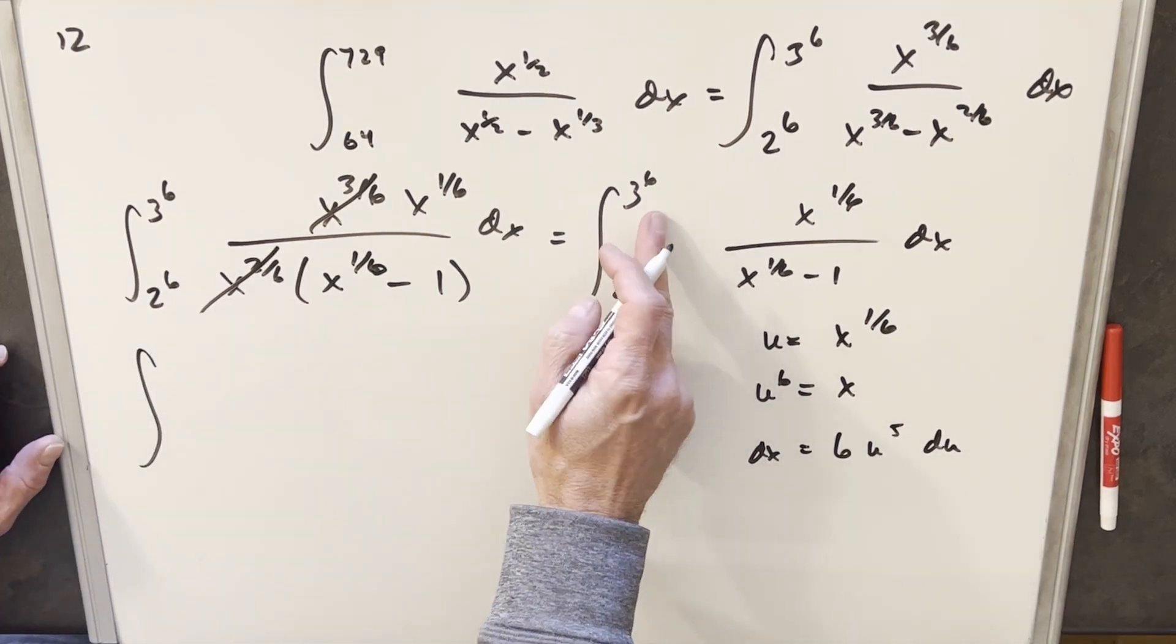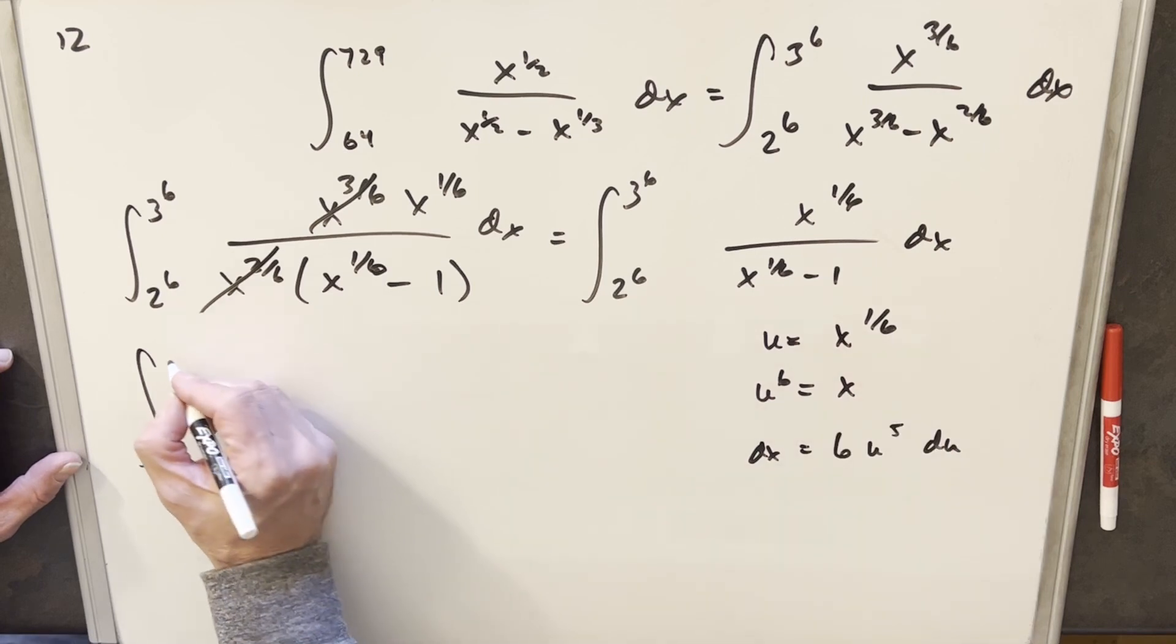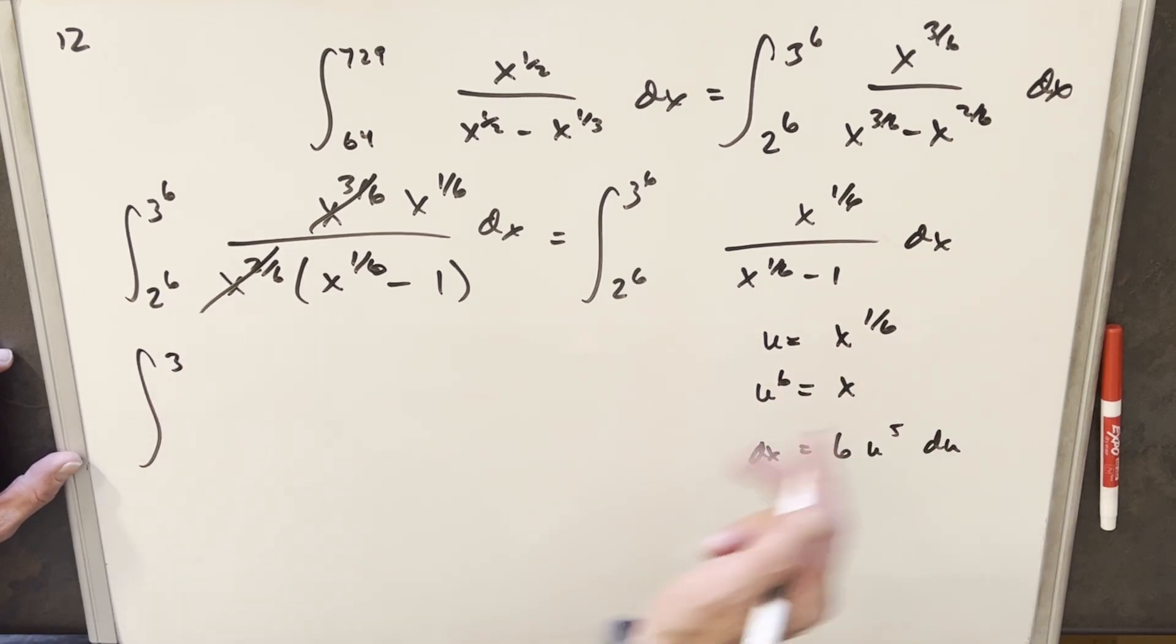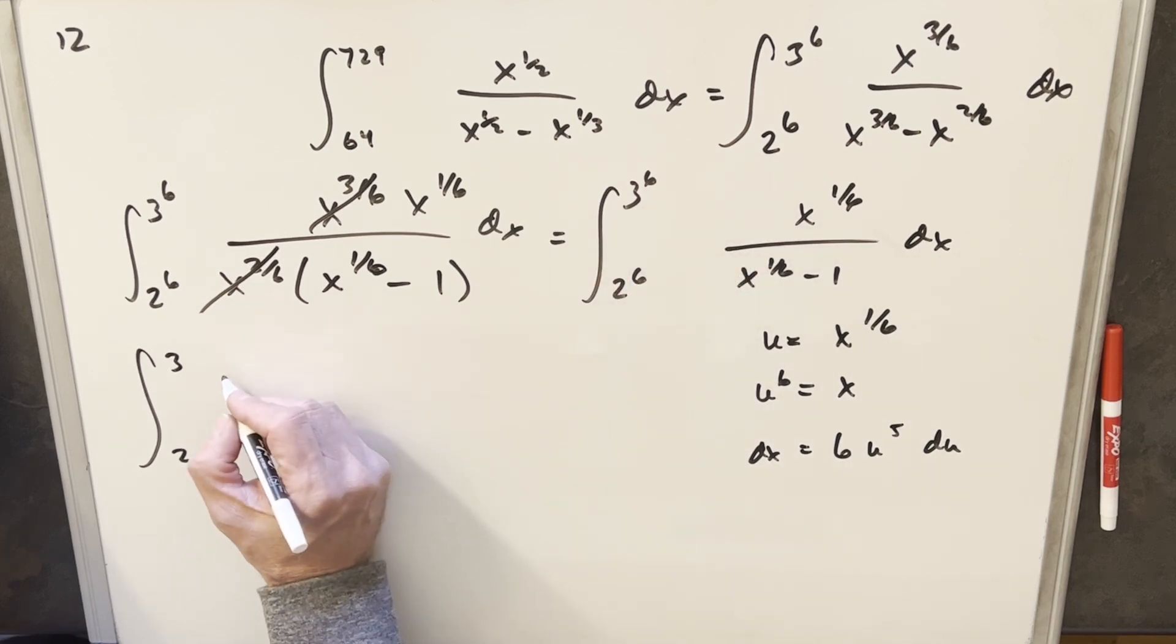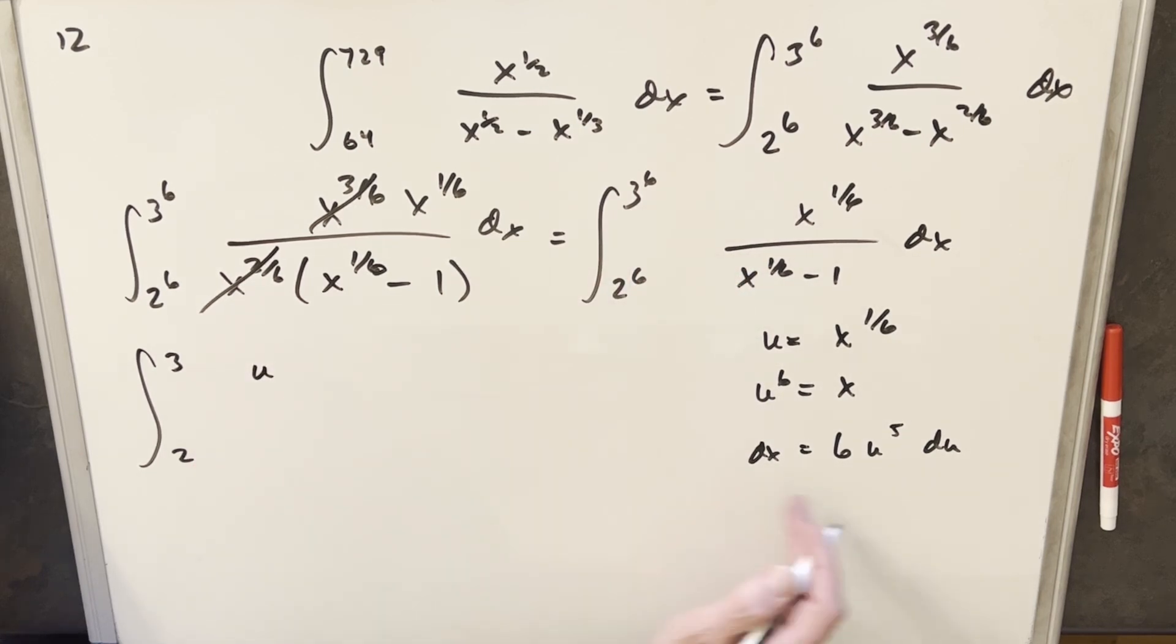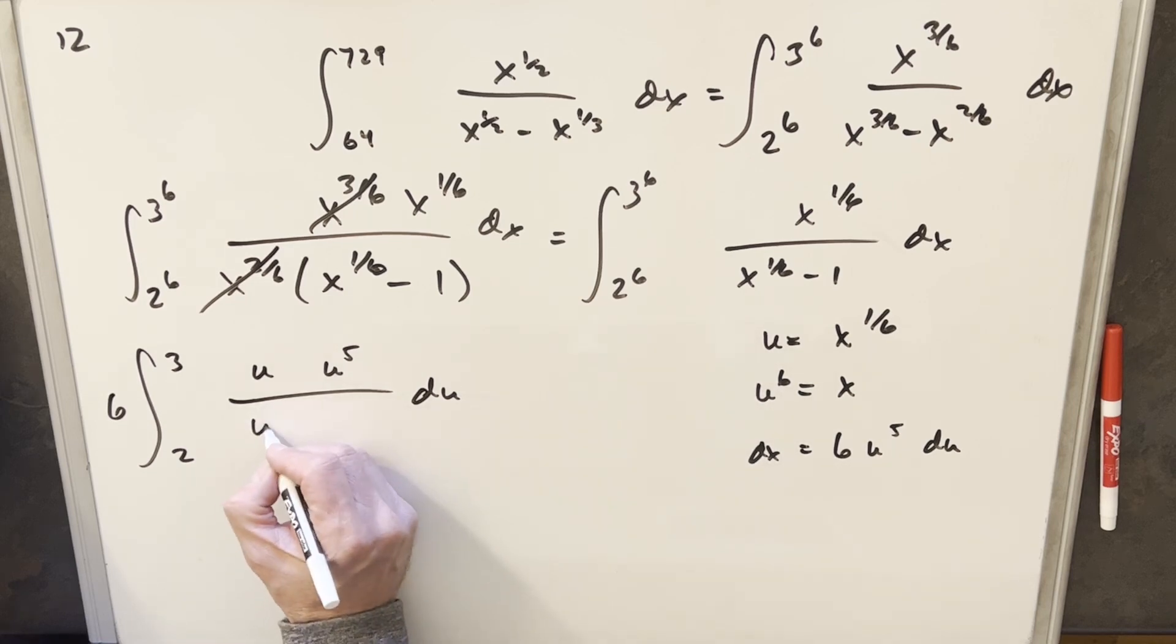Now let's make the substitution. 3 to the 6th to the 1/6 is going to be 3. 2 to the 6th to the 1/6 is going to be 2. We'll have u in the denominator for x to the 1/6. I'm going to take the 6 up front and then we're going to have u to the 5th times du, and in the denominator we're going to have u minus 1.